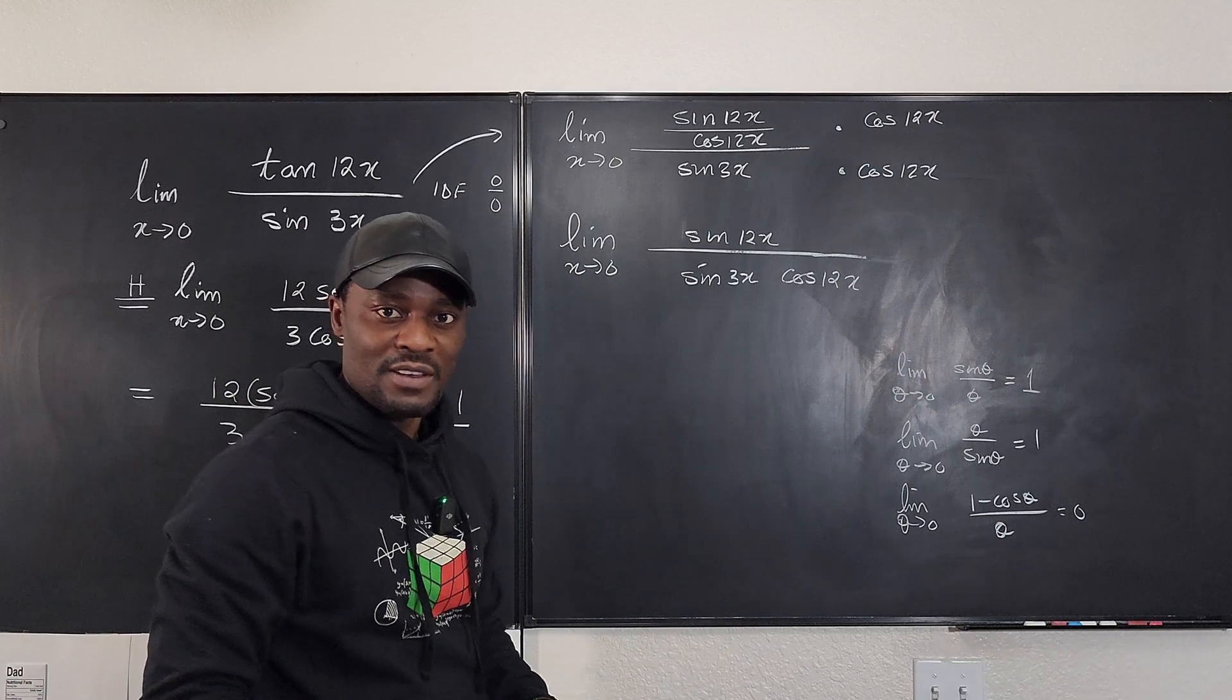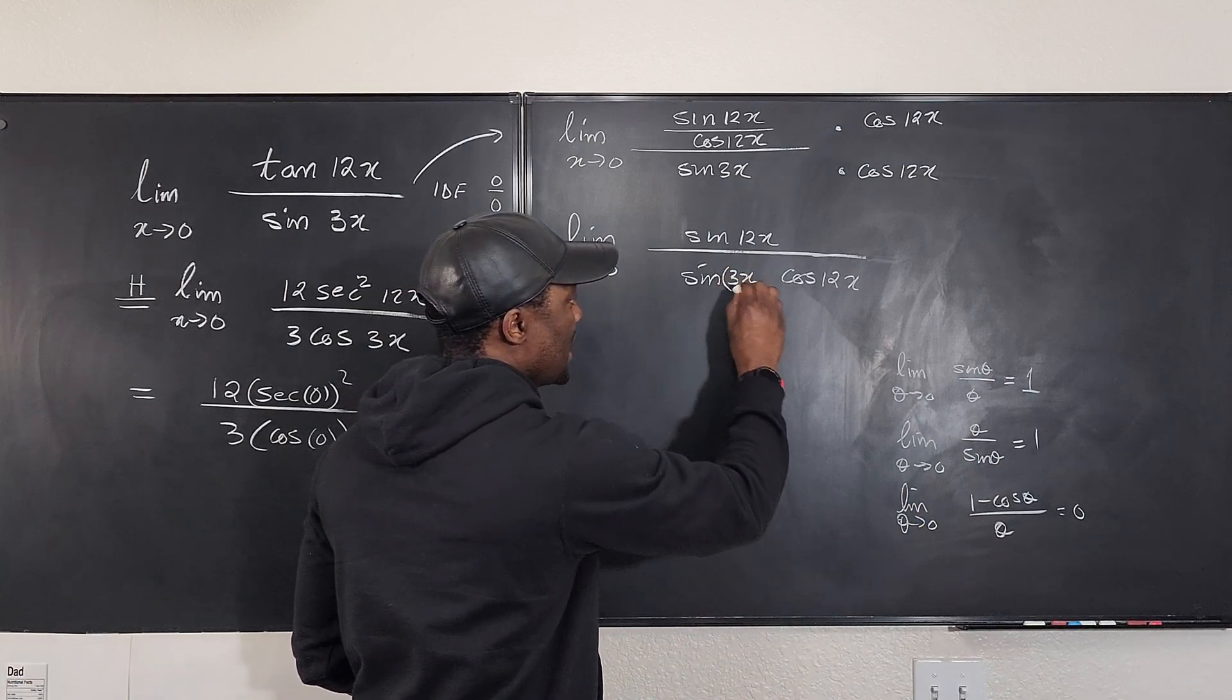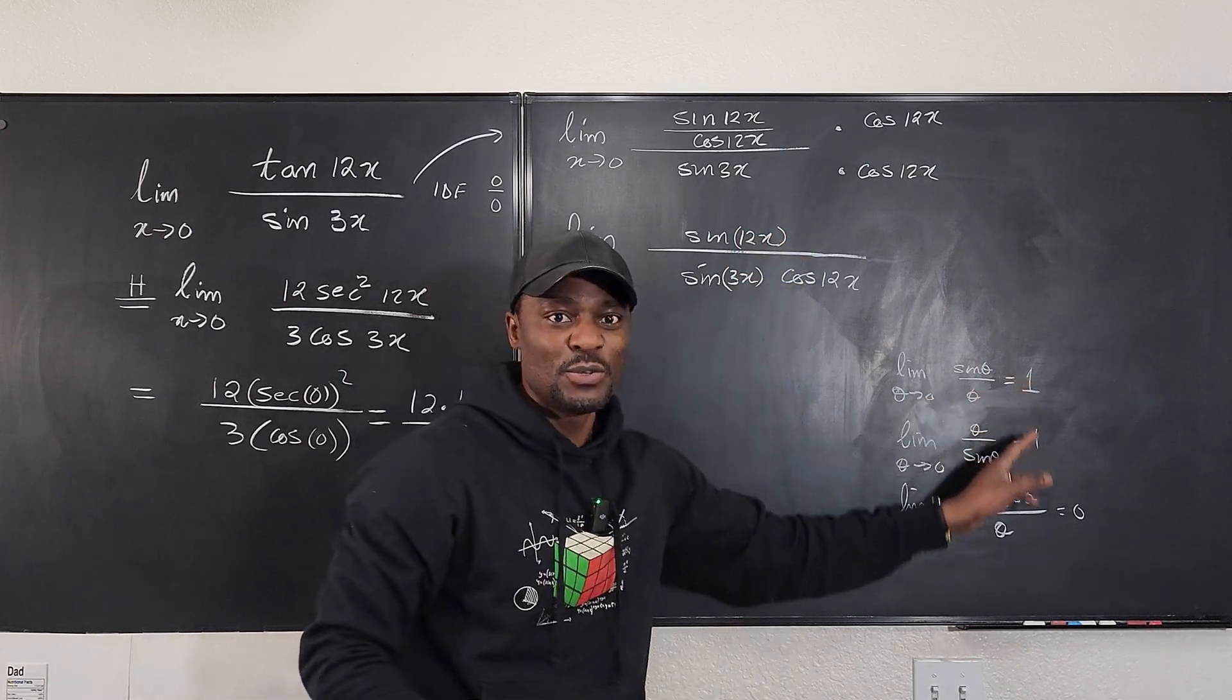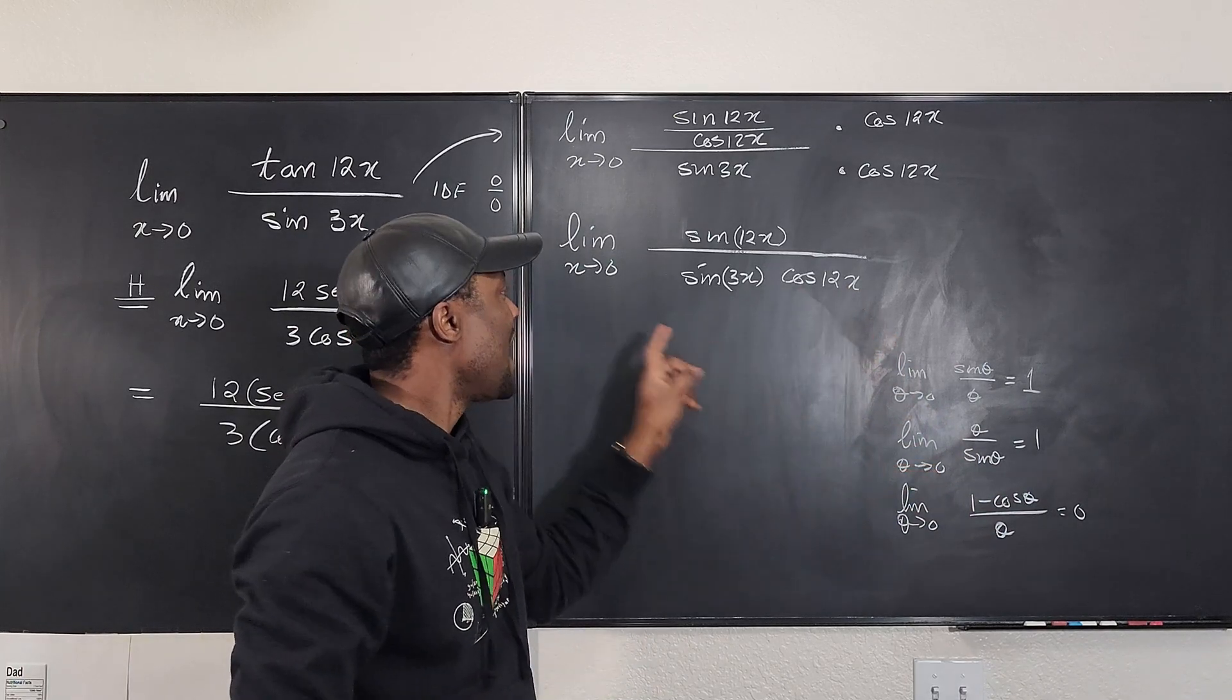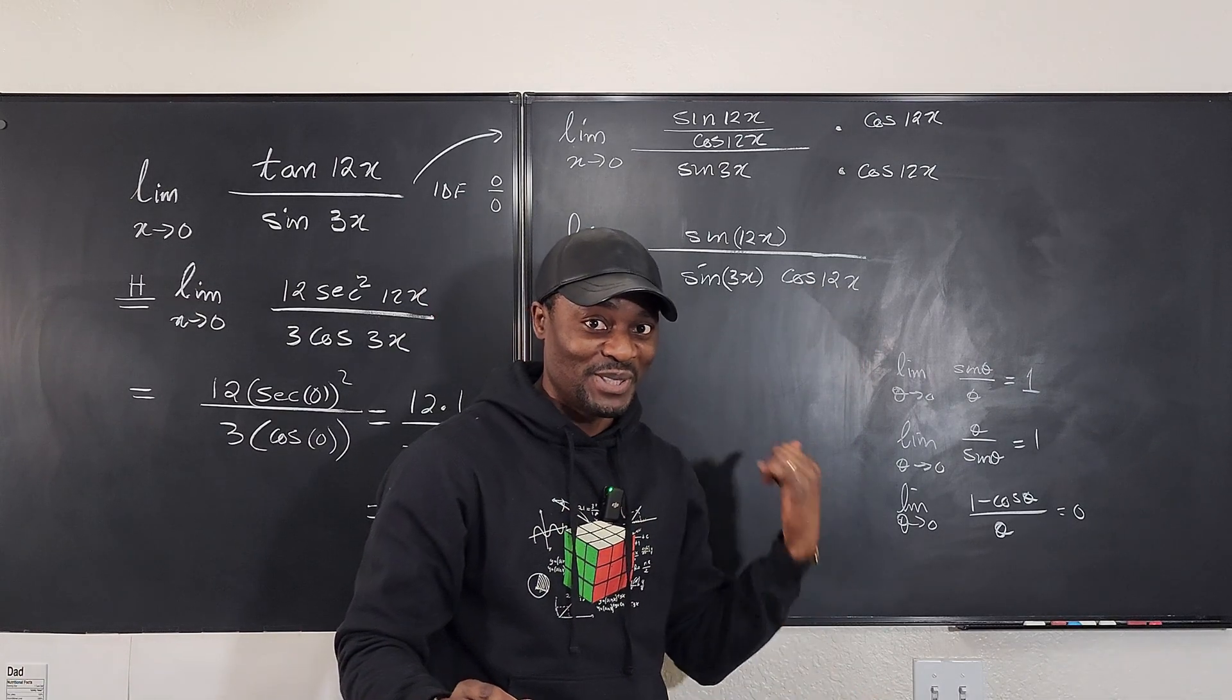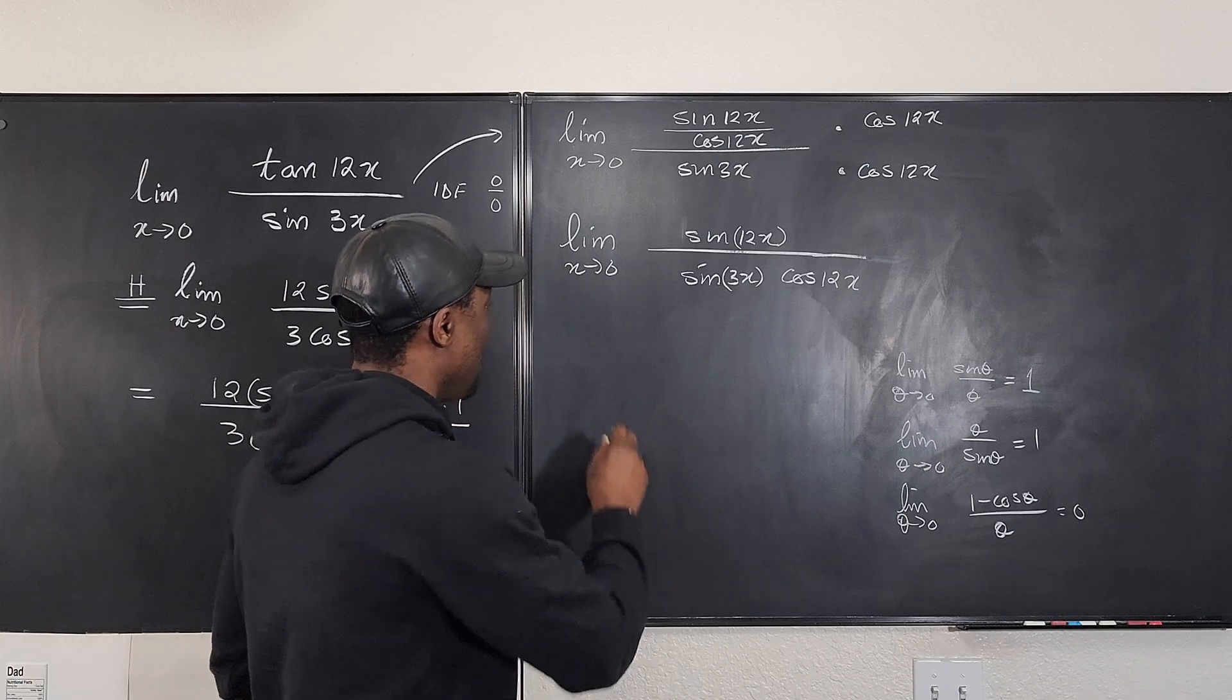So what do I do with what I have here? Now this is where you get smart. You want to create a situation where the argument of this sine is on top and the argument of this sine is down here, so you can generate one. And cosine 12x, we don't have a problem with that because as x goes to zero, this is going to become cosine zero, and cosine zero is one. So cosine doesn't give us any trouble in this case. So we don't need this. What we need is we need this and we need this. So now let's quickly plug this in.